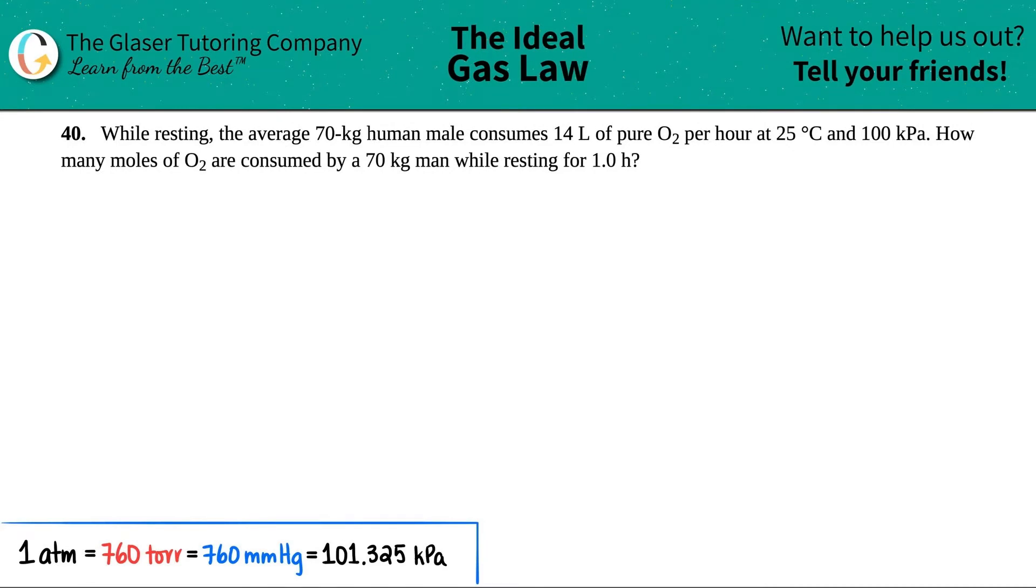Number 40. While resting, the average 70 kilogram human male consumes 14 liters of pure oxygen, which is O2, per hour at 25 degrees Celsius and 100 kilopascals. How many moles of oxygen are consumed by a 70 kg man while resting for 1.0 hours?